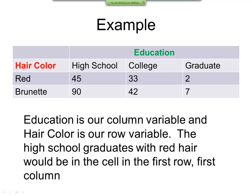For this example, we're doing education across the top and then we got our hair color on the sides and we're counting how many, for example, how many high school students have red hair in this particular example. So it's 45. Now education is our column variable and hair color is our row variable. The high school graduates with red hair would be in the cell in the first row, first column. So this 45 right here, first column, first row.